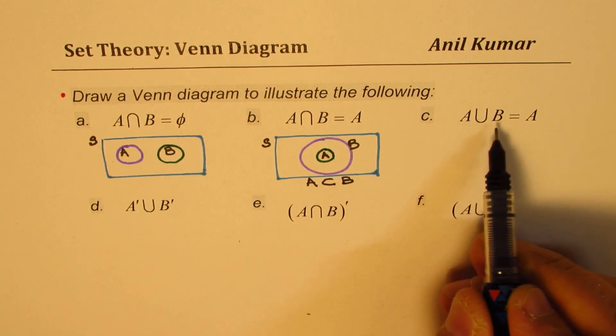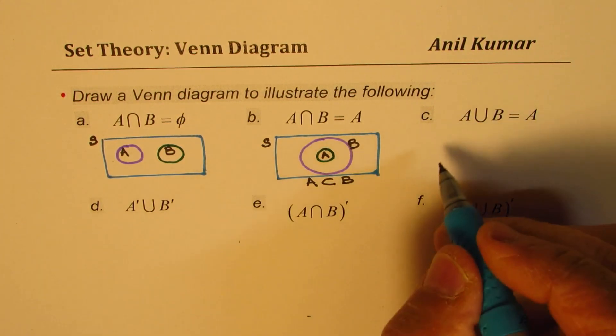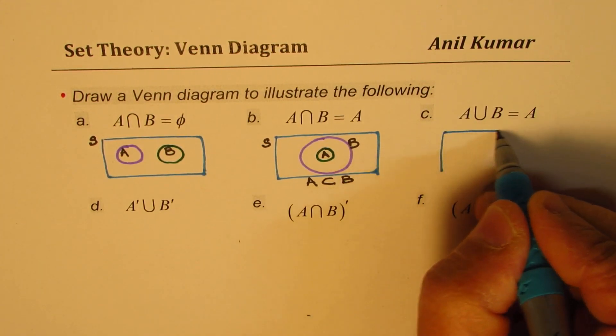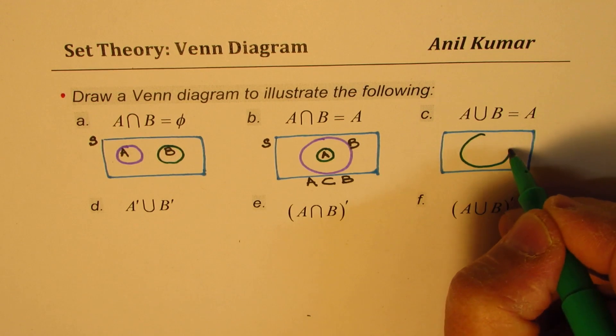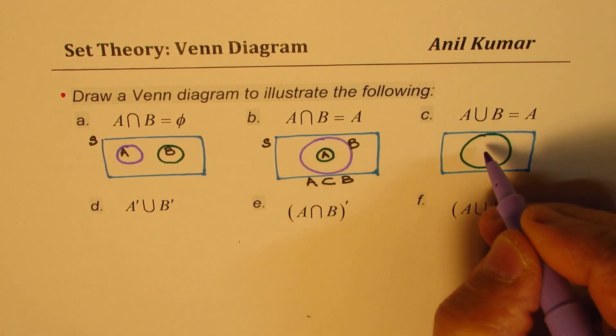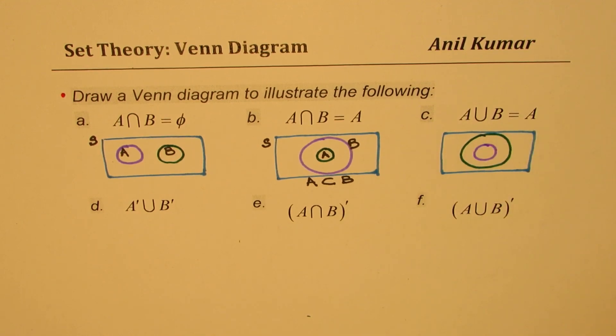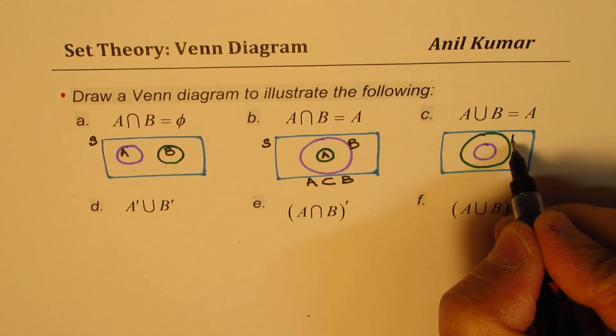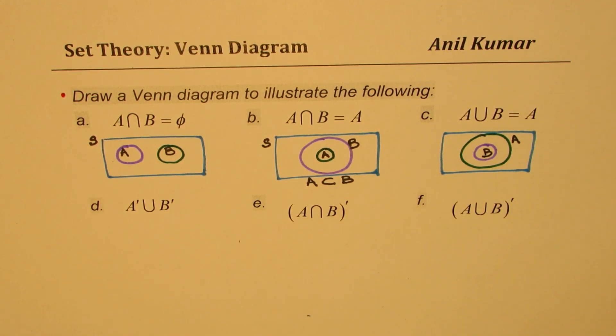The next one here is union of A and B is A. It means what? When the union is A that means A is a bigger set. It holds B in it. So the bigger set here is A and the smaller set is B. So in this particular case this set outside is A, therefore the union will be A. And this inside set is B. Is that clear to you? So that is how you are going to share it.